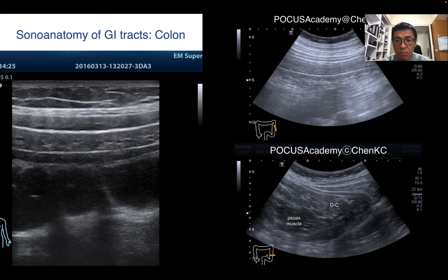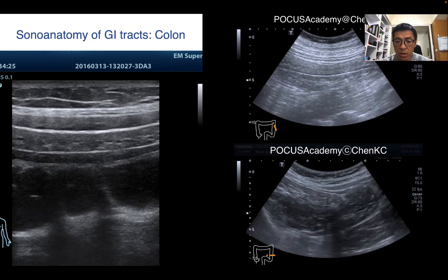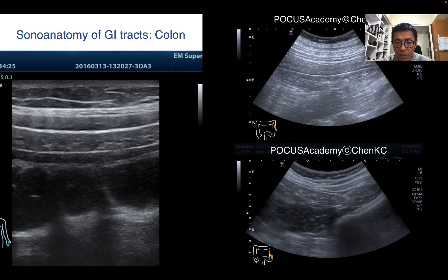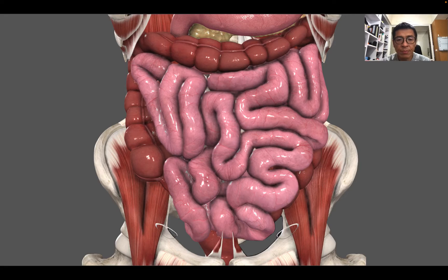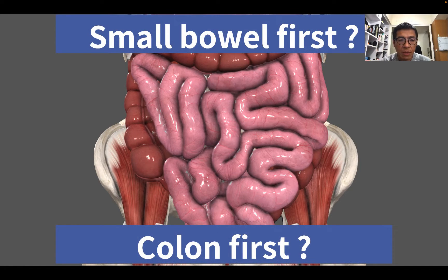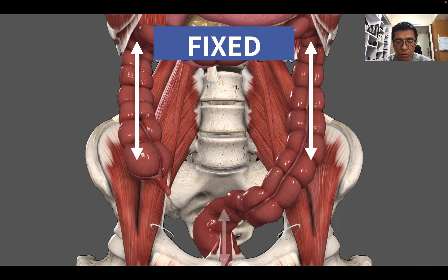In this situation, it is much easier to observe when the GI structure is collapsed. So, where to start our examination — small bowel first or colon first? I recommend to scan the fixed parts first: ascending colon, descending colon, and rectum. Those are retroperitoneal, fixed inside the retroperitoneal region. So we start our examination from these three regions.